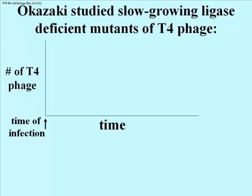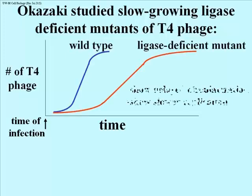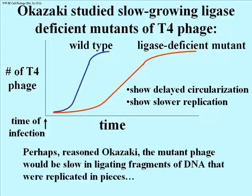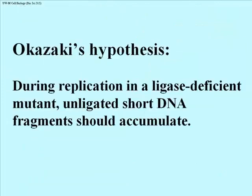Okazaki knew the role of DNA ligase in closing bacteriophage DNA circles, and he had isolated several mutant strains of the phage, called T4, that were deficient in making DNA ligase. These phage multiplied more slowly than wild-type phage, as shown by the growth curves on this slide. Because the mutant phage were slow to close their DNA circles after infecting E. coli cells, replication of these mutant phage was also slower. But Okazaki also proposed that phage DNA replication itself might be using DNA ligase to stitch together fragments of DNA made discontinuously on the lagging template strand at replication forks, and that these mutants were doing this process slowly.